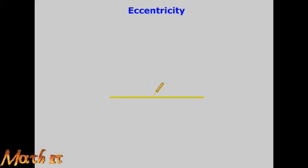First, the ellipse looks like this. Let's put a horizontal line. On the line, V1 and V2 are the edges — these are the two vertices V1 and V2, which are the horizontal vertices of the ellipse.